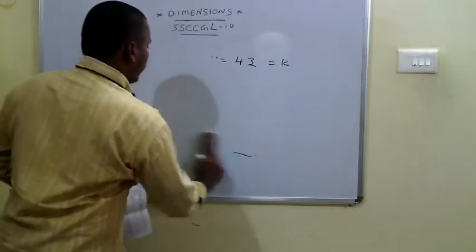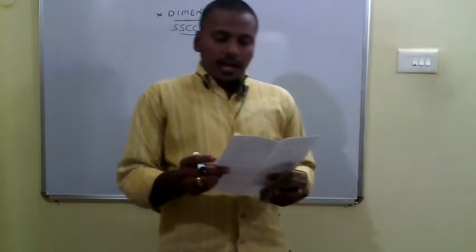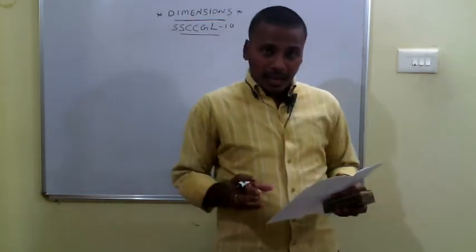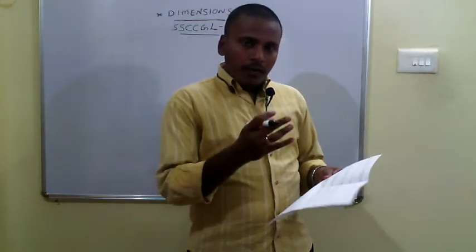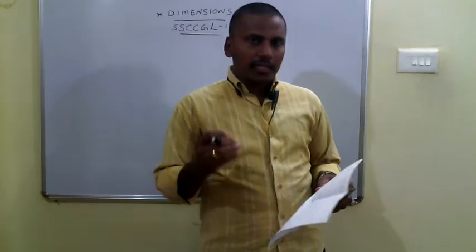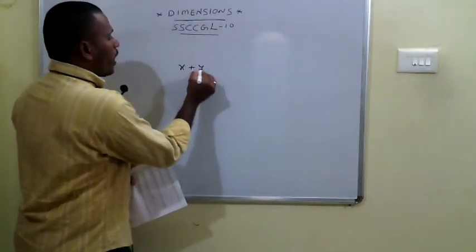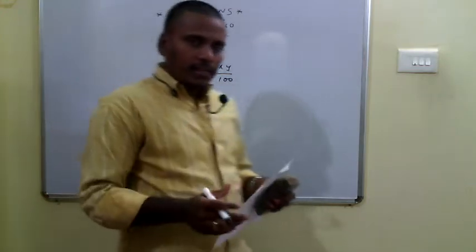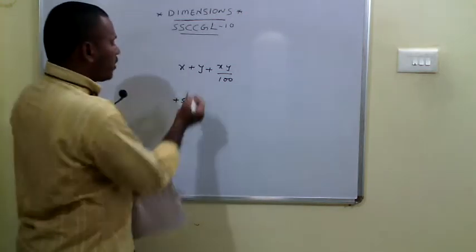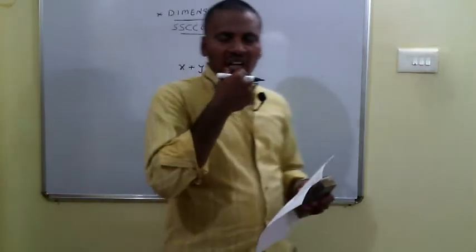The 54th problem: in measuring the sides of a rectangular plot, one side is taken as 5% in excess and the other 6% in deficit. The error percent in the area is calculated using the formula x + y + xy/100. Here length changes by +5% and breadth by −6, giving 5 + (−6) + (5×(−6)/100) = −1 − 0.3 = −1.3%. There is a change of 1.3% in the area.